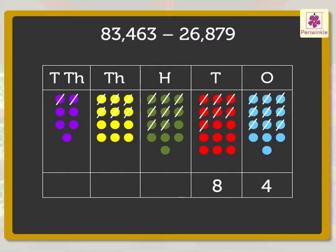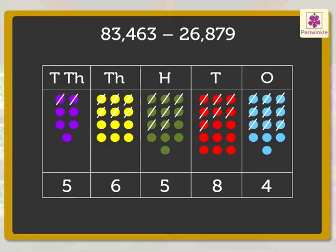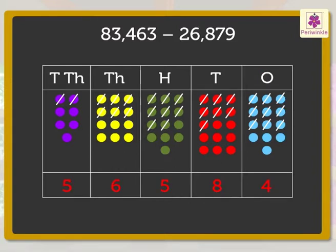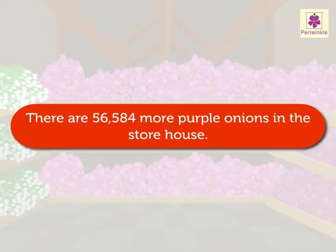We are left with 4 blue, 8 red, 5 green, 6 yellow and 5 purple dots. So, we get in all 5 ten thousands, 6 thousands, 5 hundreds, 8 tens and 4 ones, which is equal to 56,584. Thus, there are 56,584 more purple onions than the spring onions in the storehouse.